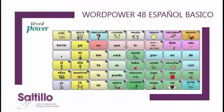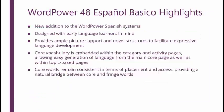WordPower 48 Español Básico is a new addition to our Spanish systems. It offers a 48-location vocabulary developed with early language learners in mind, providing ample picture support and novel structures to facilitate expressive language development. Core vocabulary is embedded in the category and activity pages, with consistent core word placement providing a natural bridge between core and fringe. Let's take a brief tour.